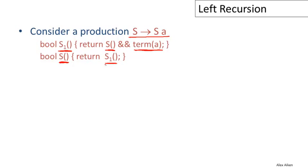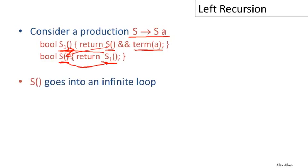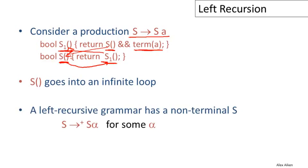Now you can see the problem. When we go to parse an input string, we call the function S, which calls S1. The very first thing S1 does is call S again. As a result, S goes into an infinite loop and we never succeed in parsing any input. This will always go into an infinite loop. The reason this grammar doesn't behave well is because it is left recursive.